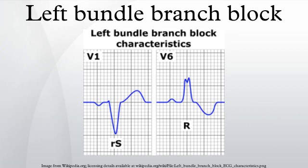ECG Diagnosis: The criteria to diagnose a left bundle branch block on the electrocardiogram are: the heart rhythm must be supraventricular in origin; the QRS duration must be equal to or greater than 120 milliseconds; there should be a QS or RS complex in lead V1; and there should be an RSR wave in lead V6.